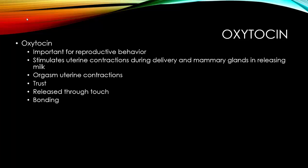Oxytocin stimulates uterine contractions during delivery and mammary glands in releasing milk. An orgasm in a woman is essentially uterine contractions, so oxytocin is very much involved in her sexual encounter. We're going to be watching videos about the orgasm shortly.